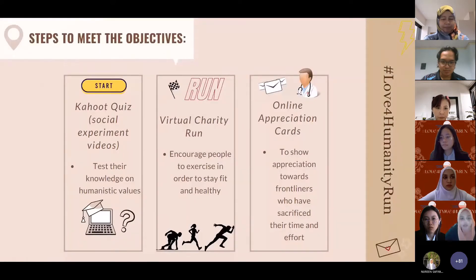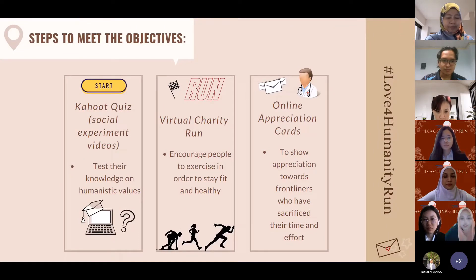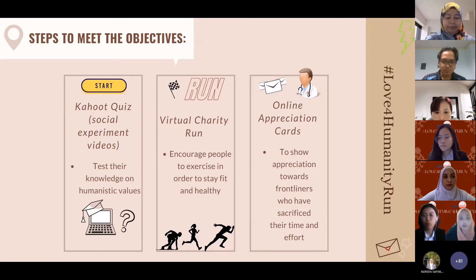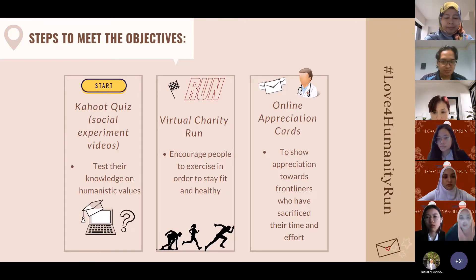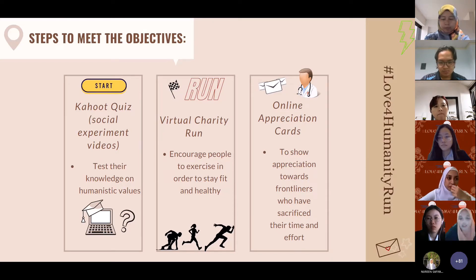The steps to meet the objectives involve three activities. The first activity is a Kahoot quiz to test knowledge and humanistic values. The second is a virtual charity run, which is the main activity, to encourage people to exercise and stay fit. The last activity is an online appreciation card to show appreciation to all frontliners for their sacrifice, time, and effort.